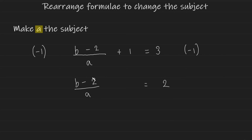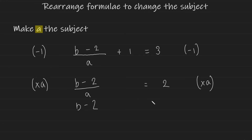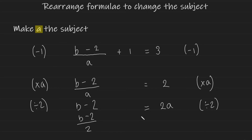Since the entire b minus 2 is being divided by a, I multiply both sides by a. An expression divided by a, with a multiplication by a introduced, cancels out the a, leaving b minus 2 on the left and 2a on the right. Now the 2 is attached to a via multiplication, so I divide by 2 on both sides, giving b minus 2 over 2 equals a. And that's how you approach a question like this.